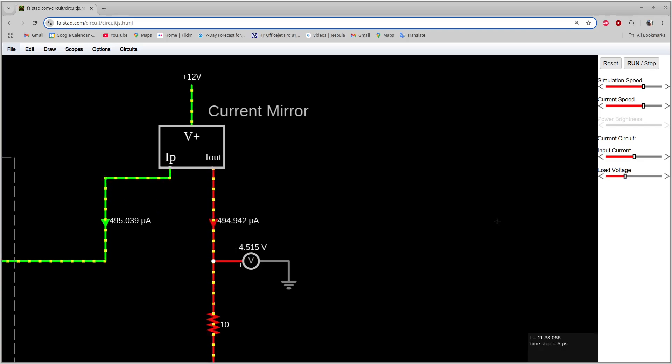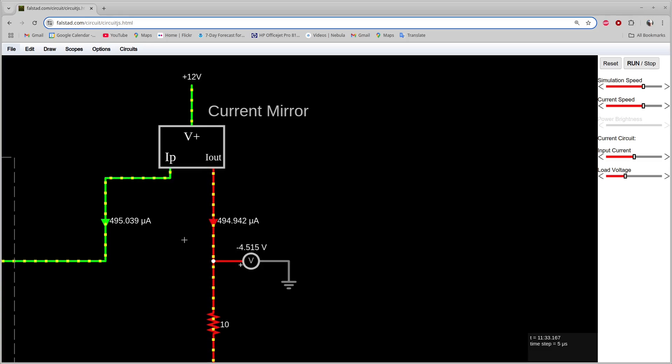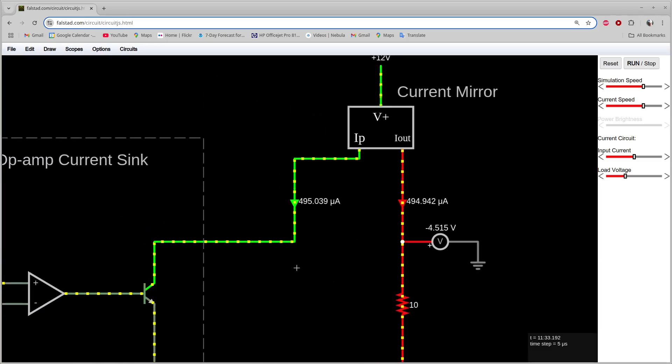The current mirror is a circuit that turns up in almost every analog IC. Often we will have two parts of a circuit that need to have equal currents, and a mirror will ensure that. Often, too, we have a current that represents a signal but flows in the wrong direction. We may have a transistor sinking current and need a current source instead. You can think of a mirror as either creating two equal currents or reversing the direction of flow of a single current.